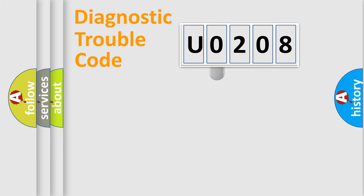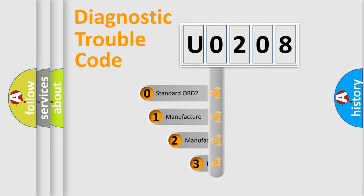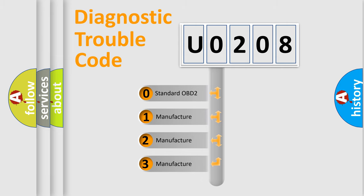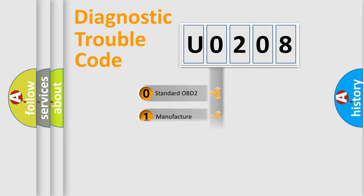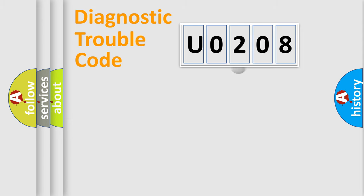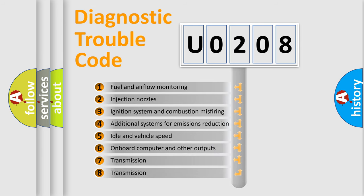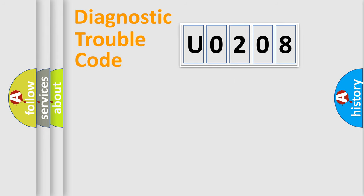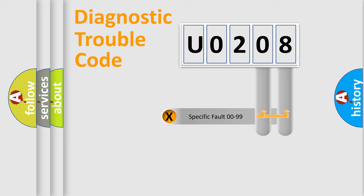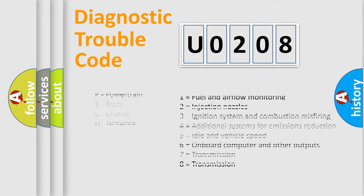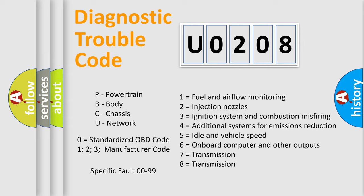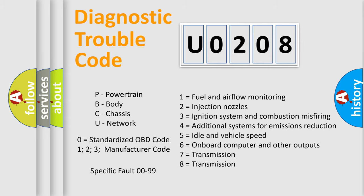This distribution is defined in the first character of the code. If the second character is expressed as zero, it is a standardized error. In the case of numbers 1, 2, or 3, it is a more specific expression of a car-specific error. The third character specifies a subset of errors. Only the last two characters define the specific fault of the group.